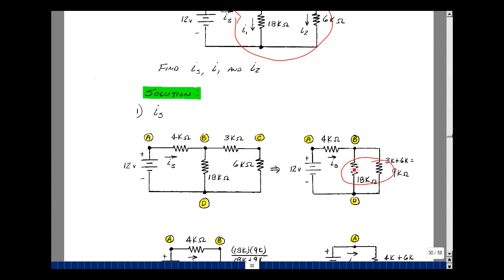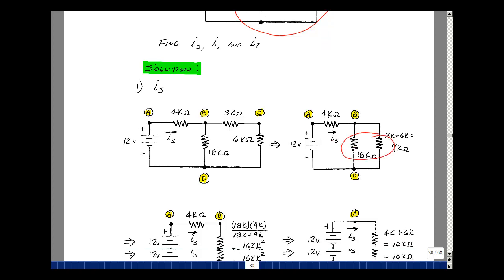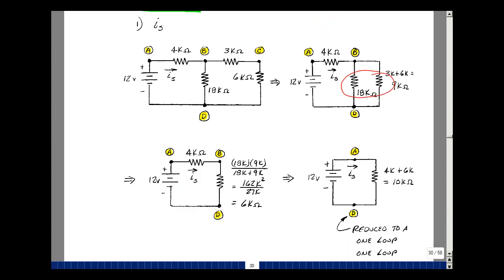Take these two resistances in parallel and replace them by a single resistance by taking the product over the sum of 18k and 9k. It turns out to be 6k. You can replace this series combination by a single resistance, whose value is the sum of 6,000 plus 4,000. So I've reduced this to a one-loop circuit.